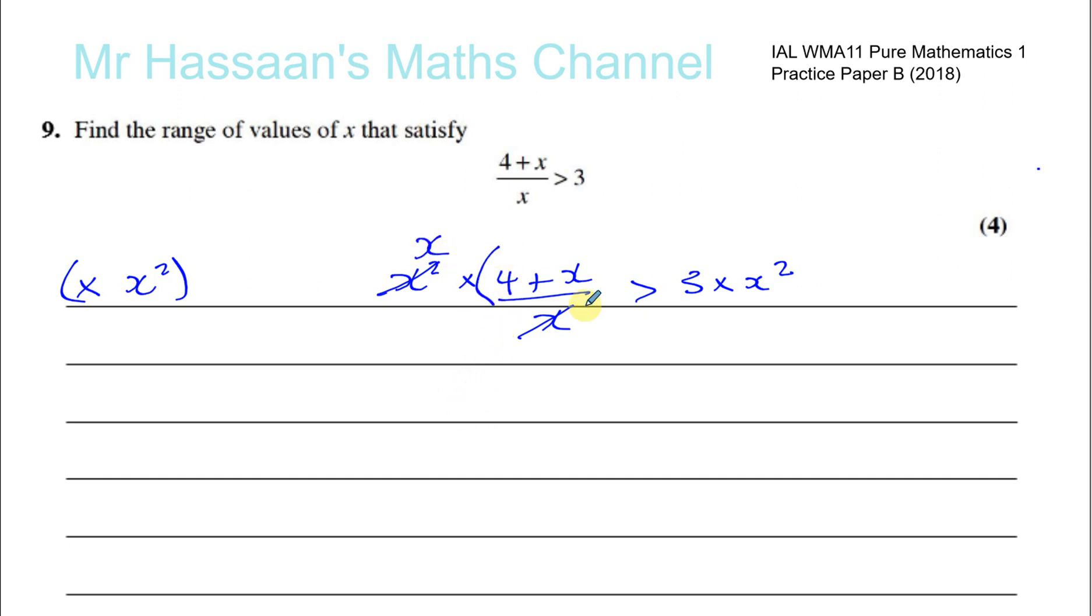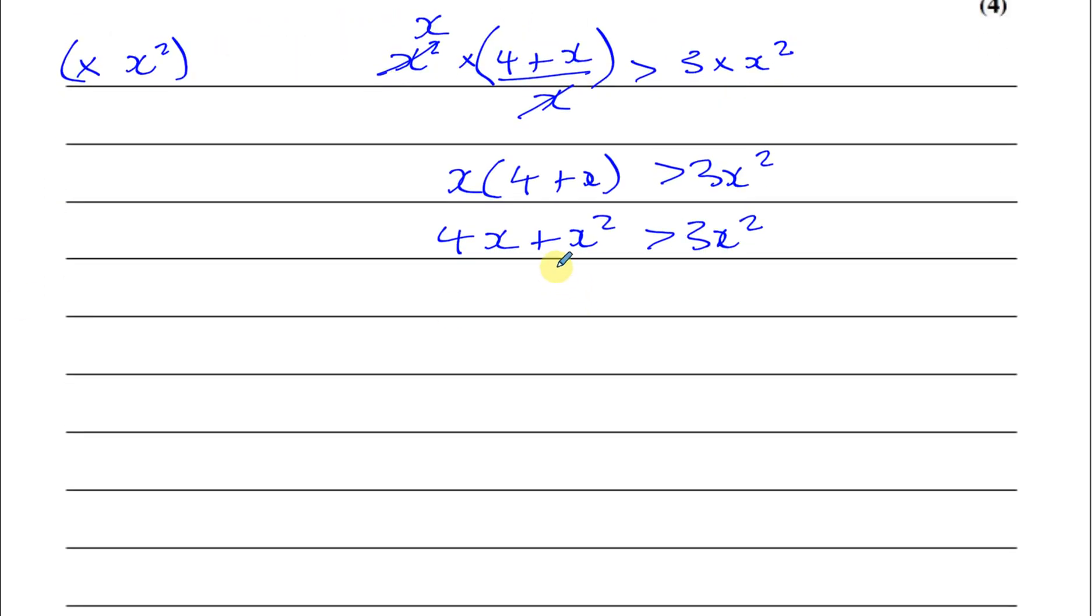You're left with x times 4 plus x is greater than 3x squared. So we've fulfilled our objective and we can now continue. This is 4x plus x squared is greater than 3x squared. Now, if we try to solve this, we'll end up with minus 2x squared plus 4x is greater than 0.